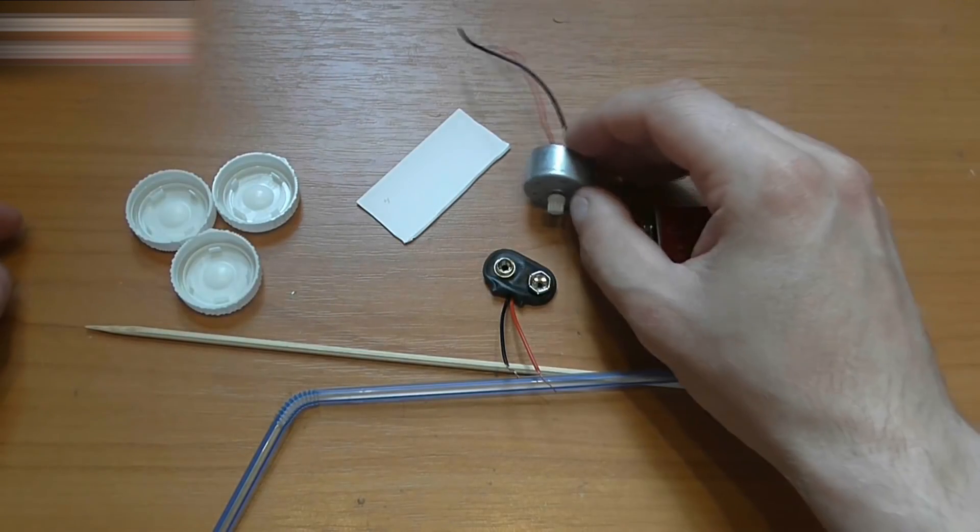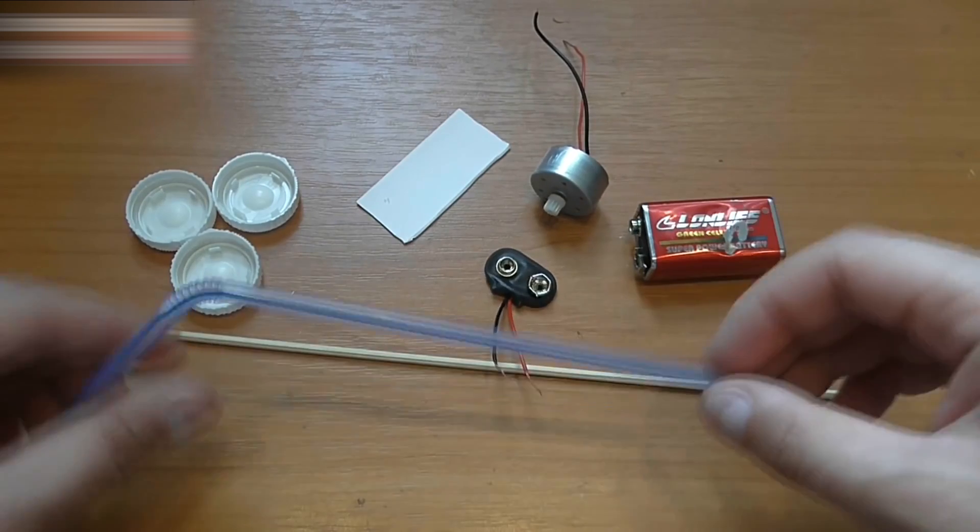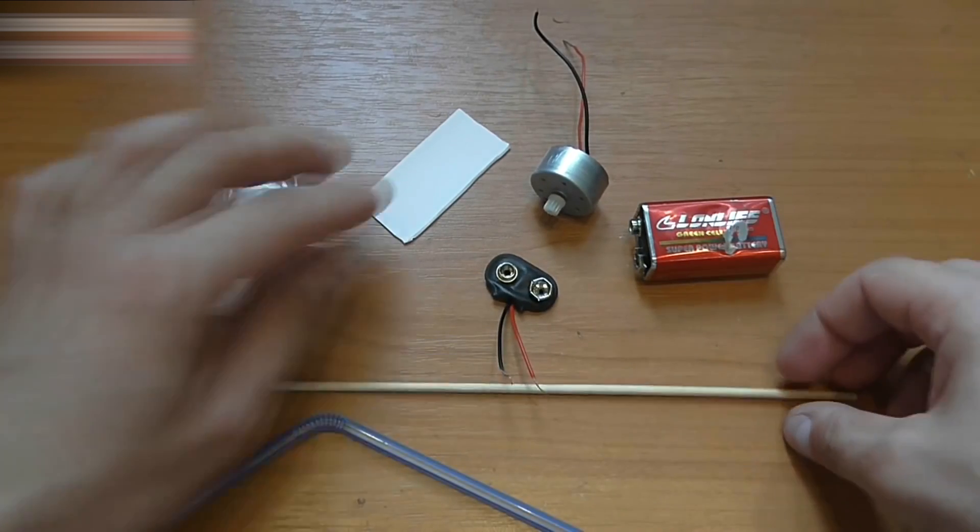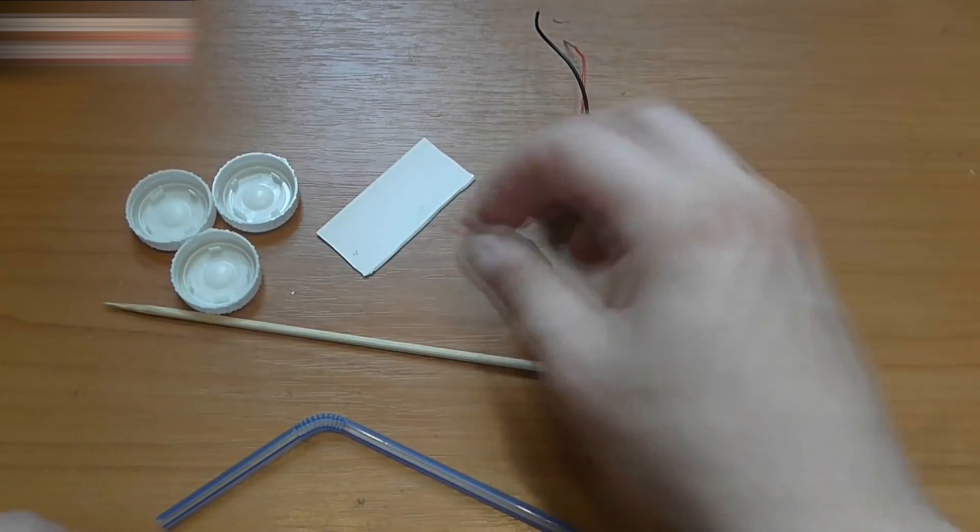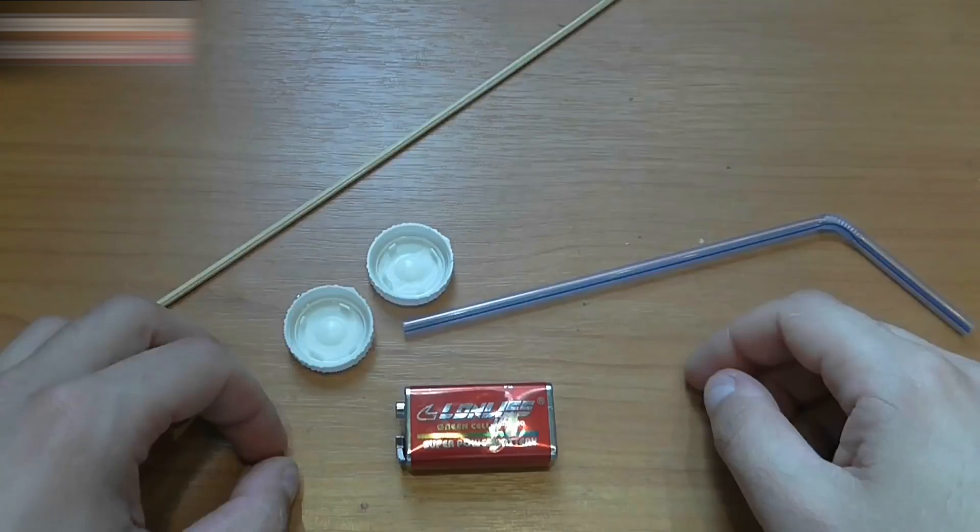Here's what we need. Three bottle caps, a 5V DC motor, a 9-volt battery, a drinking straw, a barbecue stick, a piece of plastic, and a socket for the battery.